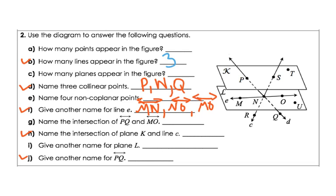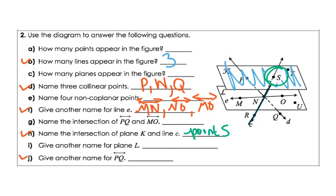Name the intersection of plane K and line C. Here's line C — they both meet where line C intersects the plane, which would be point S. And give another name for line P, Q — here's line P, Q — and that would be line D.